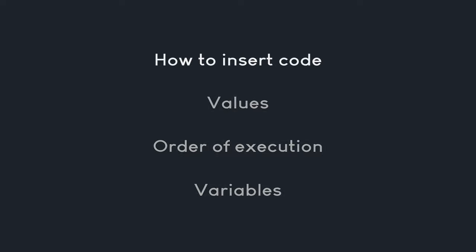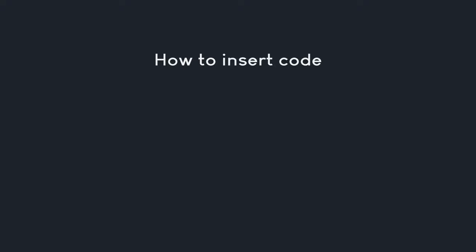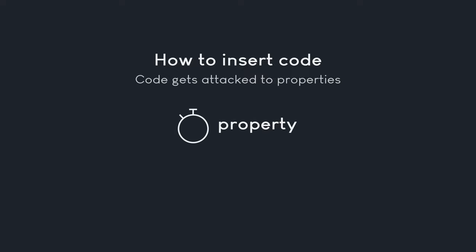The very first topic is how can we write code in After Effects in the first place. And that is actually surprisingly simple, because all you have to understand is that any property can get code. More specifically, anytime you see some kind of property with a stopwatch, you can write code for that property. Let's have a look at this in After Effects.